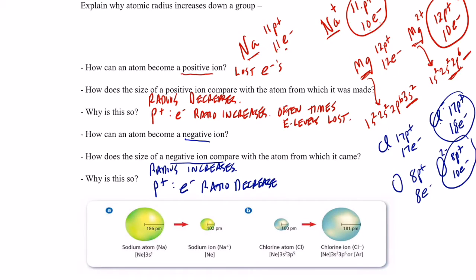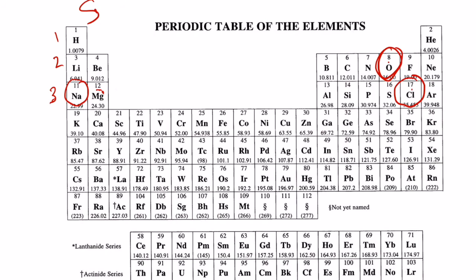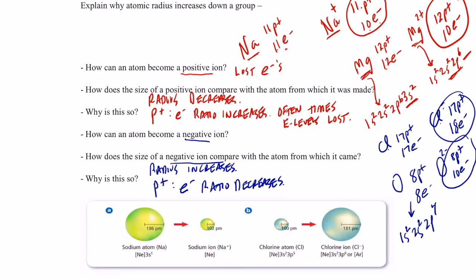With negative ions, you don't lose energy levels. Take oxygen: its electron configuration is 1s² 2s² 2p⁴. The O²⁻ ion gains electrons in the farthest energy level, becoming 1s² 2s² 2p⁶ - it still has only two energy levels. We don't gain energy levels, but the proton-to-electron ratio gets smaller, so fewer protons are pulling on those electrons, allowing the electron cloud to increase in size.